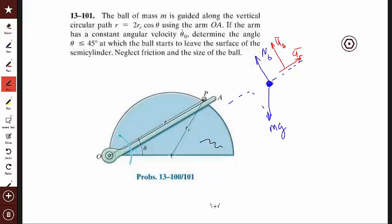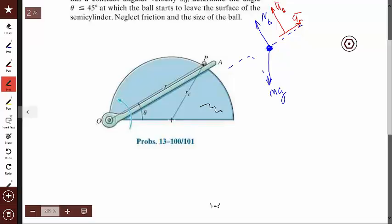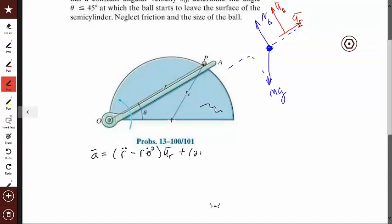So after you have the free body diagram you need to sum forces, and I'm going to use R and theta, so I really need to find the acceleration using R and theta. So I remember the formulas, they look like this: R double dot minus R theta dot squared, that will be in the radial direction, and then I have 2 R dot theta dot plus R theta double dot in the theta direction.